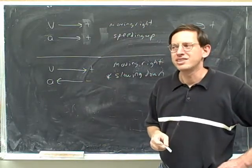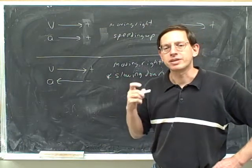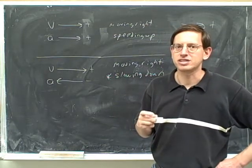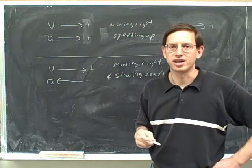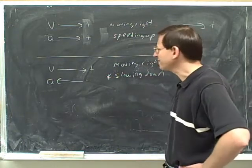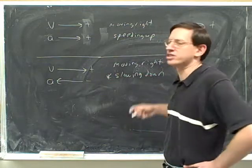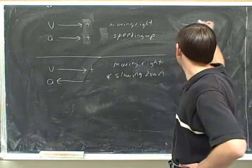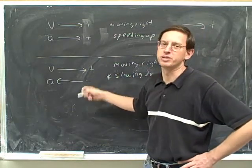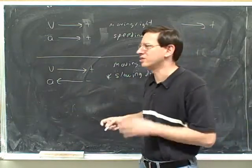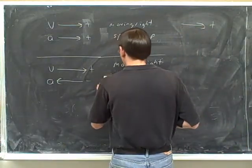If something is slowing down, that does not guarantee that the acceleration is negative. If something is slowing down, that does guarantee that the acceleration has a different sign than the velocity. You usually should choose the direction of motion as your positive direction — if you do, then when you're slowing down the acceleration will be negative. But you always have to check what you've chosen as your positive direction.